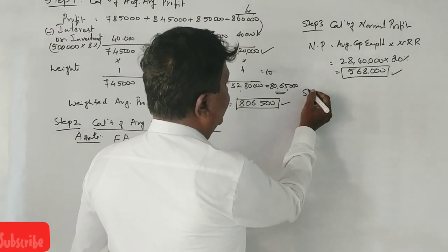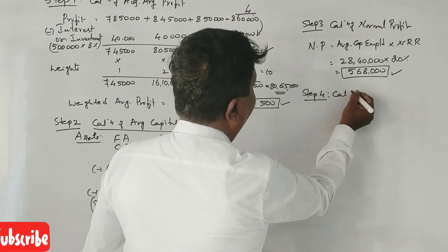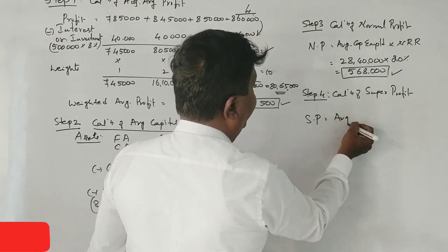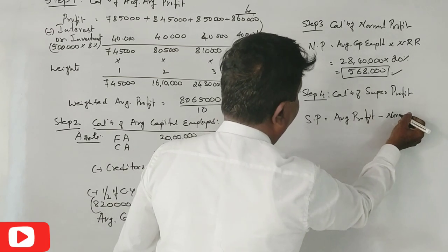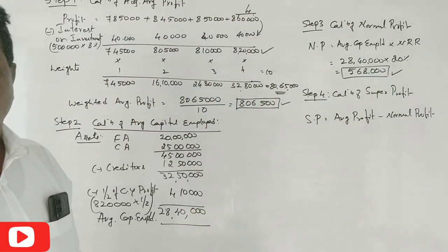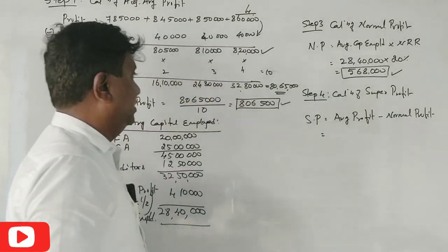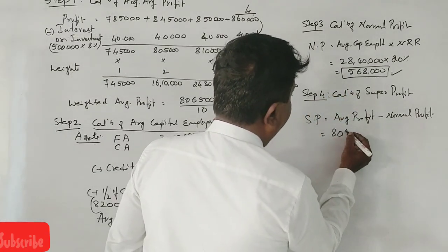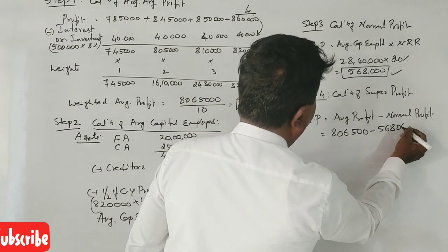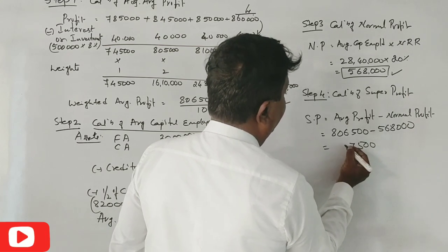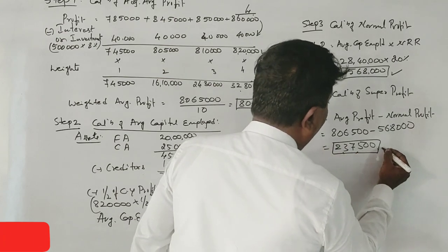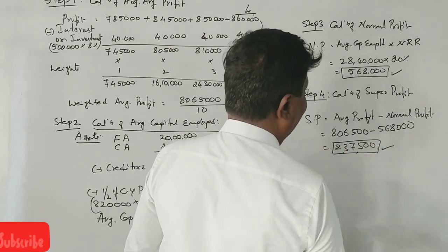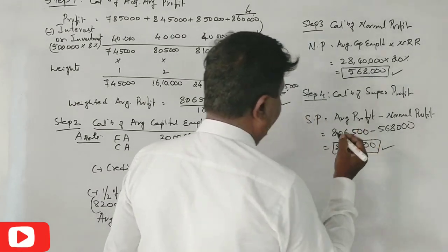Step number 4: Calculation of super profit. Super profit equals average profit minus normal profit. Average profit is 8,06,500 minus normal profit 5,68,000. That equals 2,38,500.